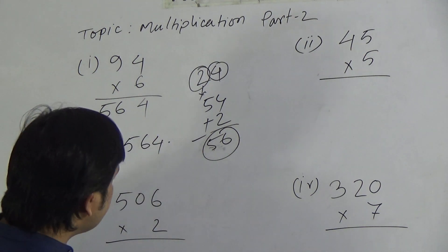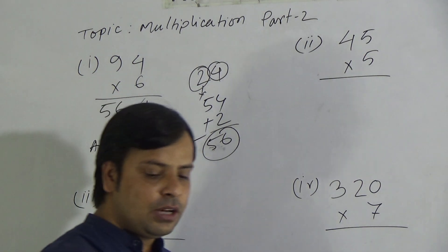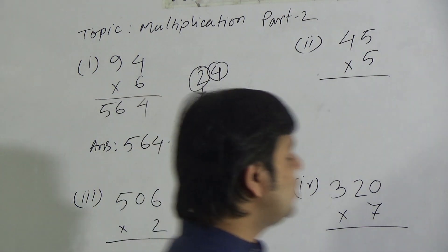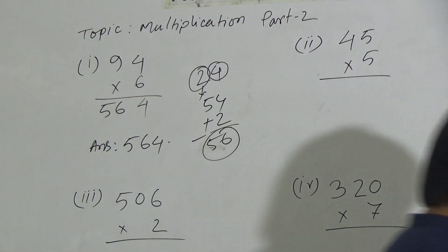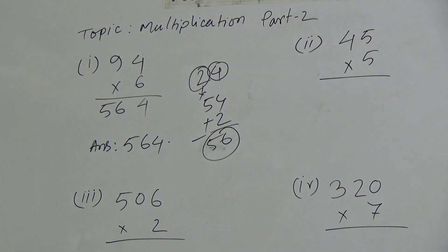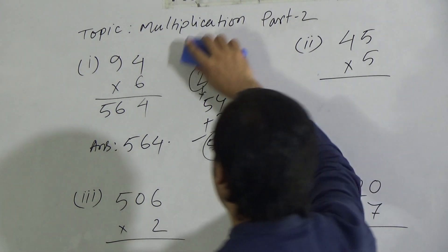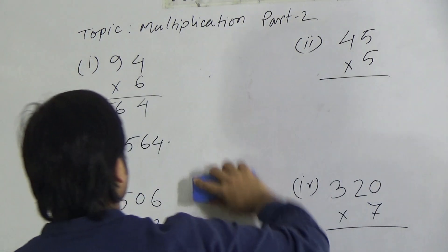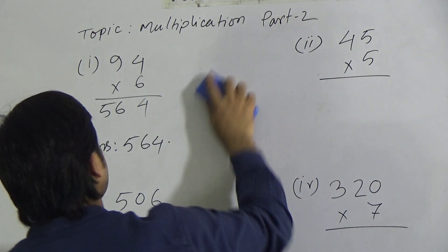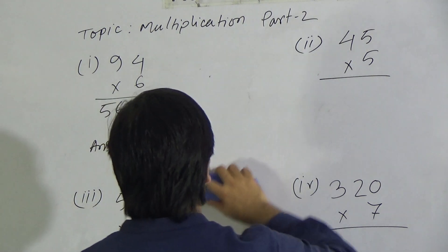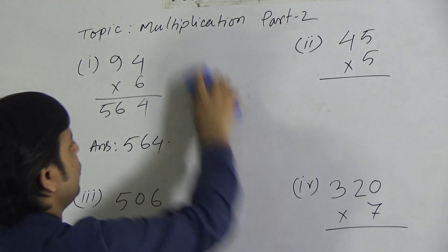I hope you have understood the solution of the first question. The product of 94 and 6 is 564.